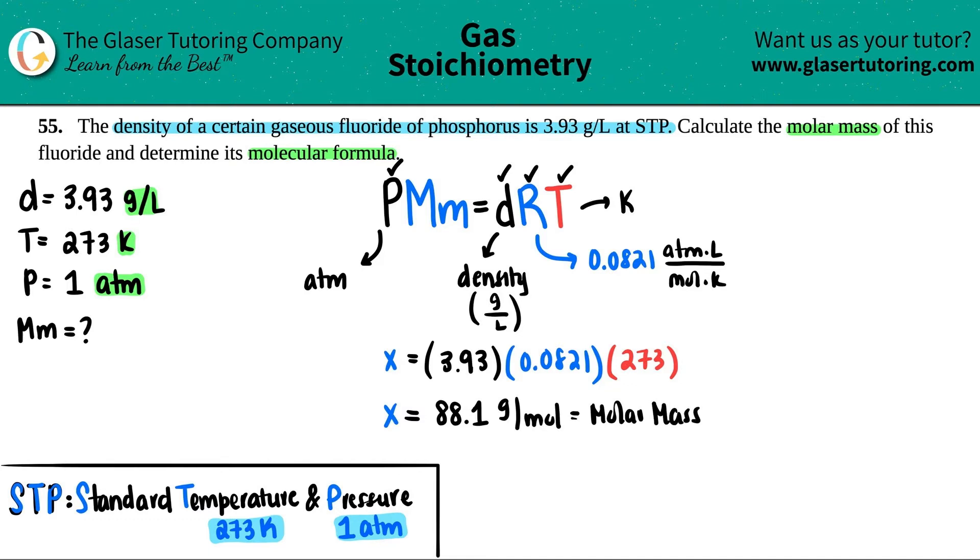So we got X equals, let's see what that molar mass is: 3.93 times 0.0821 times 273. I'm seeing three sig figs. So we have 88.1, and molar mass is grams per mole. Okay. So this is the molar mass. Alright, so I'm just going to highlight this. And that answers the first part.